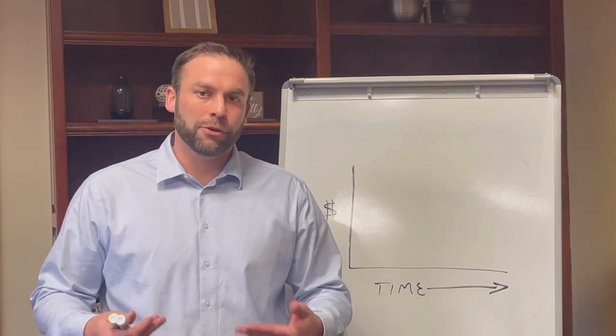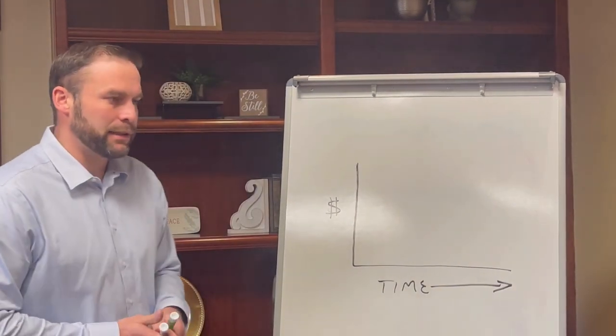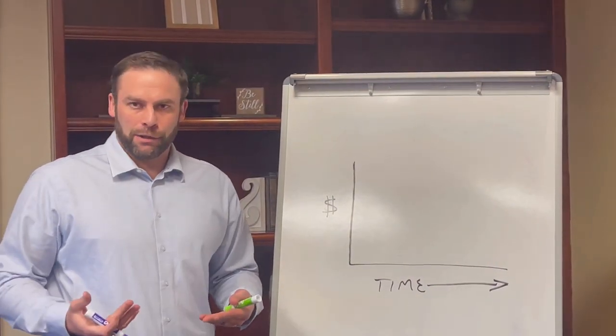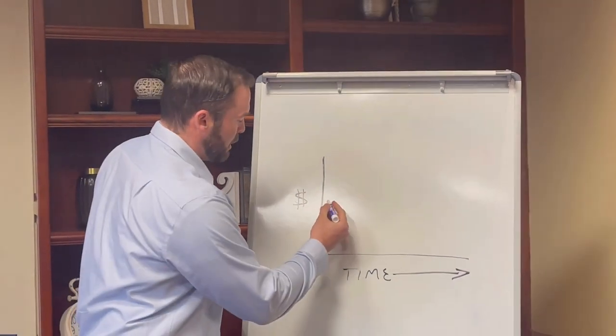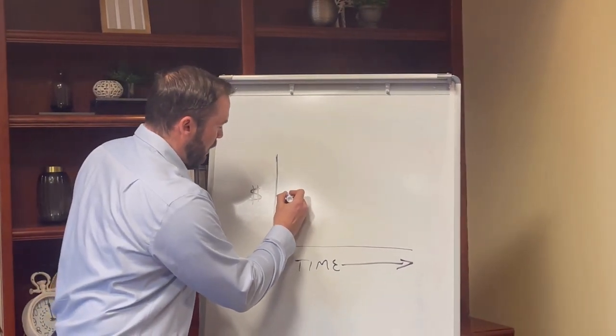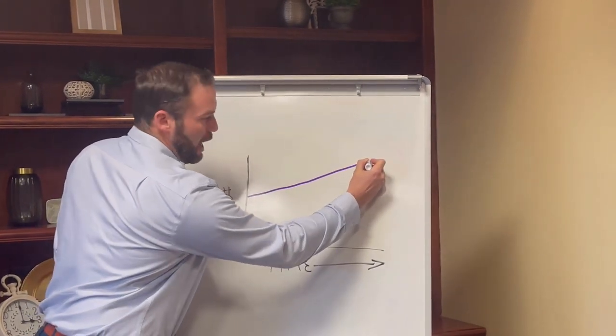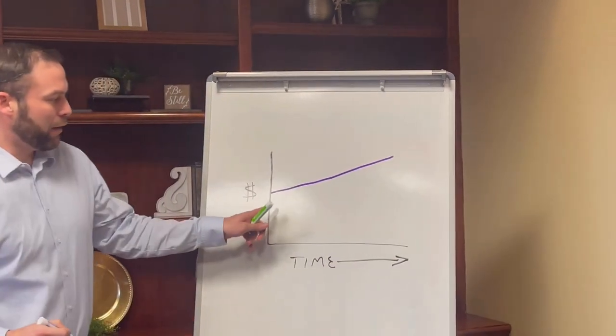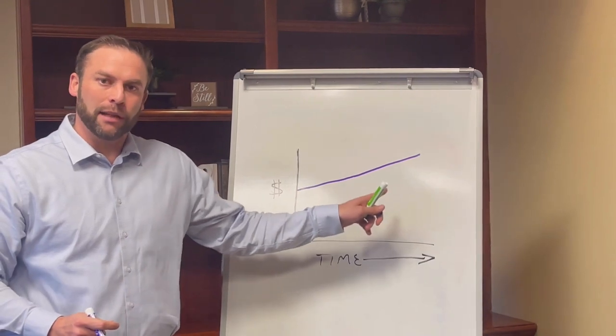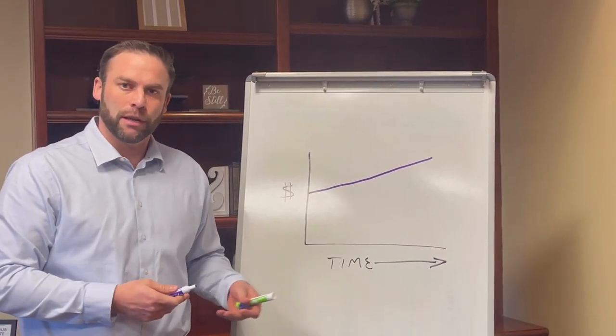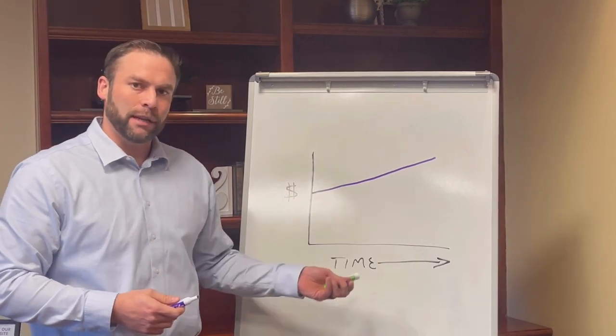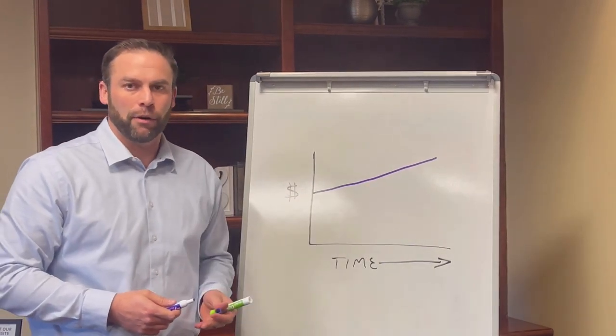So when we talk about interest, what we're really talking about is what a bank pays you. That's what most people are accustomed to. When the bank pays this interest, it's going to look more like this, where it is a straight line. And every year that we're in that, they just pay us some interest based on the value of our account and the rate of interest. So it's never going to have very much volatility. It's just going to be more of a straight line going up.